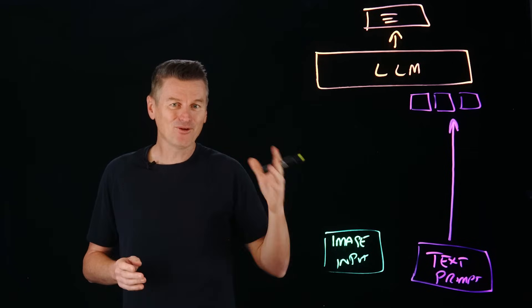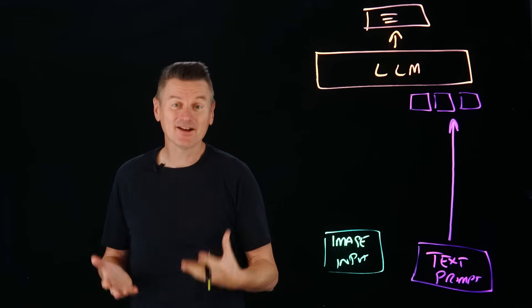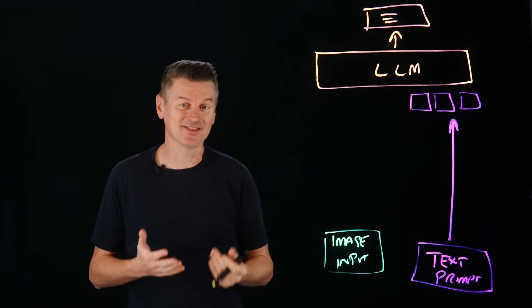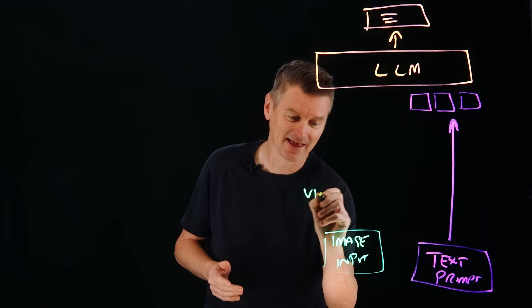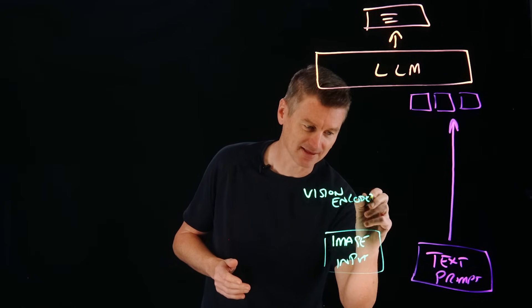Large language models don't work with raw images. They only work with text tokens. So before the LLM can process an image, it first needs to be converted into a format it can understand. And that's where a vision encoder comes into play.